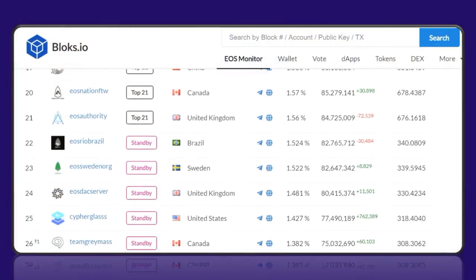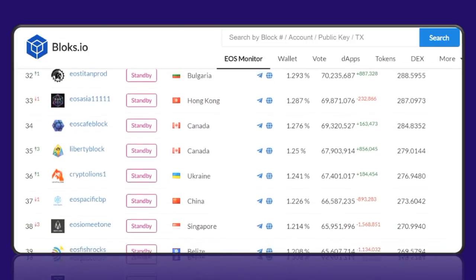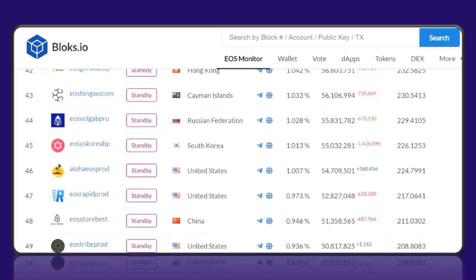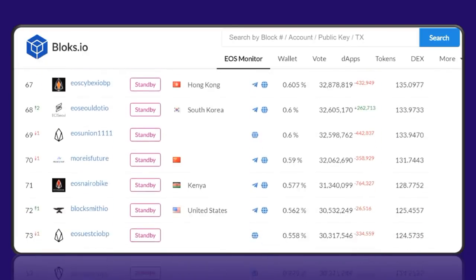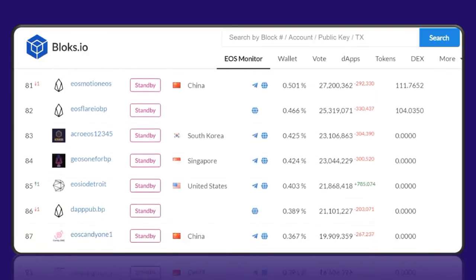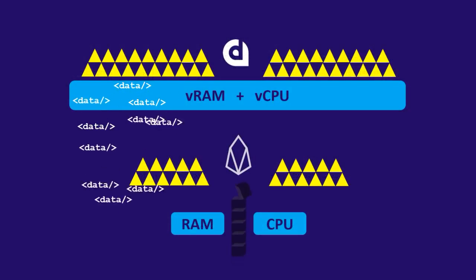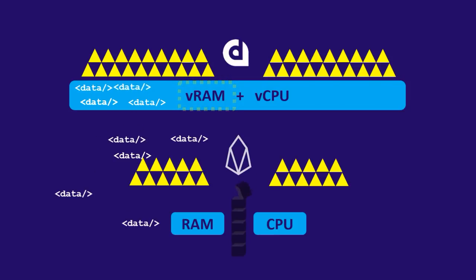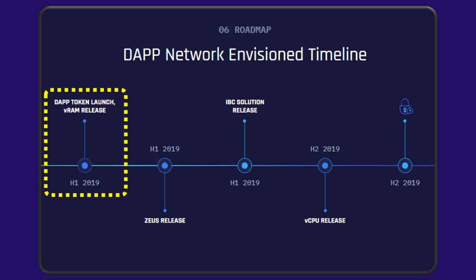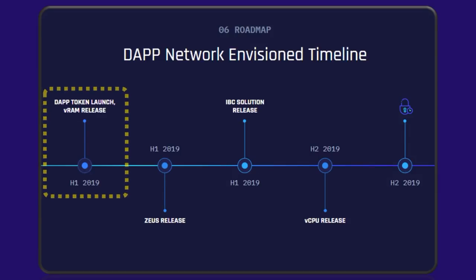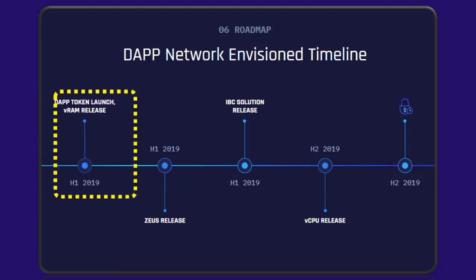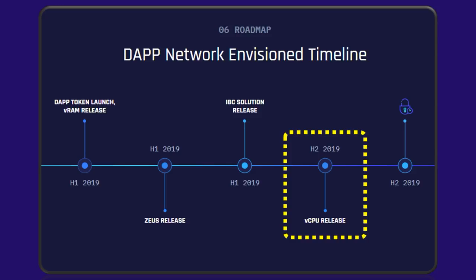The BPs on this call — especially those striving for a spot in the top 21 but not quite getting there — are going to be analyzing this new opportunity of becoming a DSP on the dApp network. Going forward, expect to see regular announcements coming out of BPs launching DSP nodes. The first service that Liquid Apps will support is VRAM, targeted to go live this February at the same time as the dApp token public sale begins. vCPU will come later, currently targeted for the second half of this year.